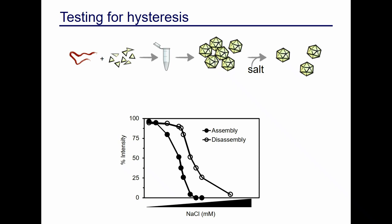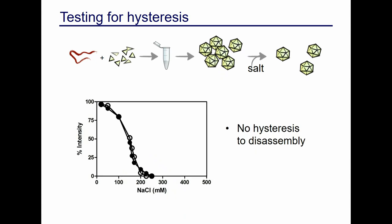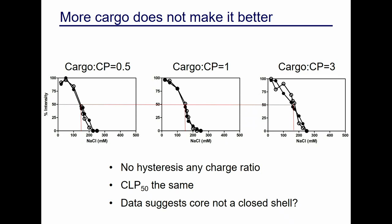We wanted to test for hysteresis. Ideally, if you assemble a particle in the presence of salt you should get an assembly curve, but once particles are formed it should be more difficult to break them up — so you'd expect the disassembly curve to shift to higher salt. In the disassembly experiment, cargo and capsid are mixed at very low salt, CLPs form, then salt is titrated in to initiate disassembly. This is what we expected to see — but we found no hysteresis with our 27-mer. We varied the cargo-to-capsid ratio and it didn't matter; assembly and disassembly showed the same sensitivity to ionic strength, and CLP50 values were the same for all three ratios.